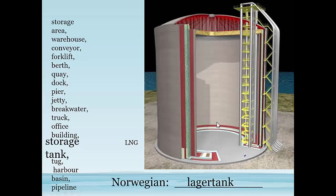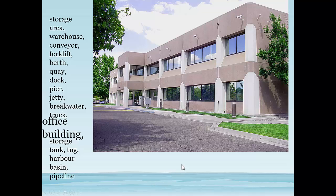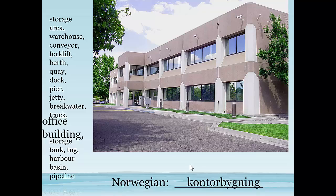This particular storage tank is a liquid natural gas tank, so it's insulated to keep the temperature down to — I think it's minus 100 and something — it's got to be pretty cold to keep it from expanding. Now, if you've got to do business in port, you've got to find perhaps the ship owning company or the port authorities. You're going to find these people in an office building. In Norwegian, «kontorbygning». You'll find several different types of office buildings if it's a large port where you go to do your business.